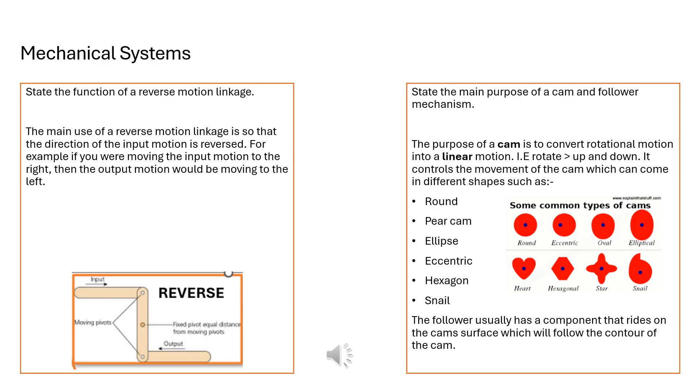State the main purpose of a cam and a follower. The purpose of a cam is to convert rotational motion into linear motion. In your spec you really need to acknowledge that the rotation will change to up and down. It's the whole idea of the conversion and if you can name the different types of cams that are available it will be helpful to you. For example some specs have said in the past that it is an egg-shaped cam but we have round cams, pear-shaped cams, ellipse, eccentric, hexagon, snail, all different types of cams that can have a different impact on the use of the follower.